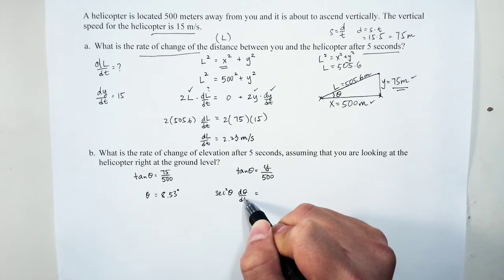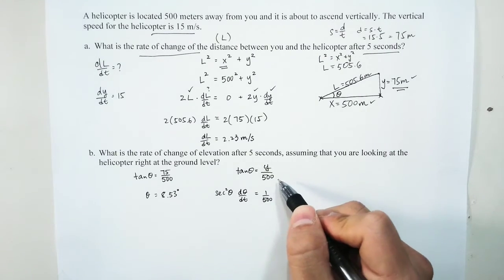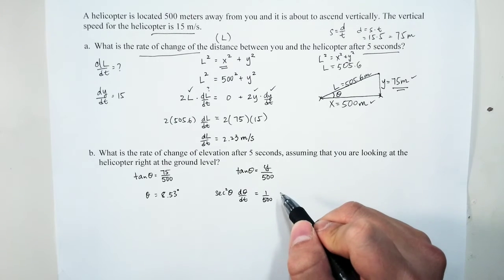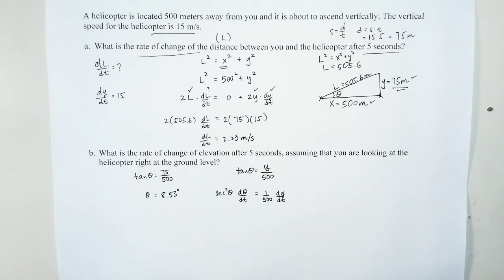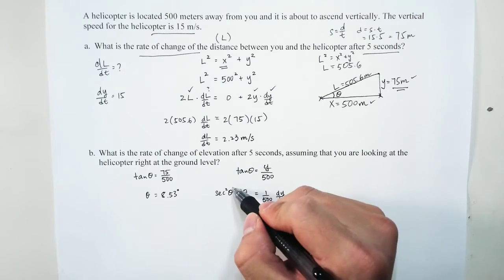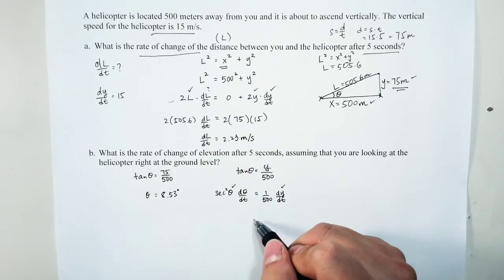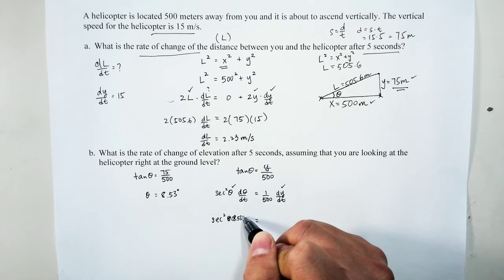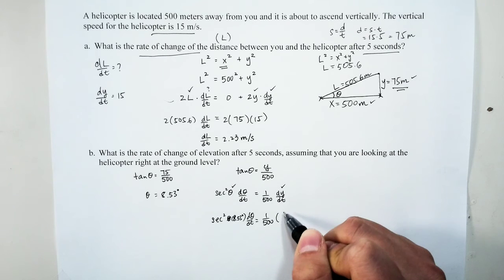We differentiate: the derivative of tan(θ) is sec²(θ), and since theta is a function of time, we apply implicit differentiation to get sec²(θ) · dθ/dt on the left. On the right, the coefficient is 1/500 and the derivative of y gives dy/dt. So: sec²(θ) · dθ/dt = (1/500) · dy/dt. We plug in theta = 8.53° and dy/dt = 15.